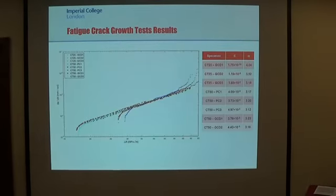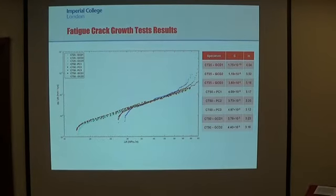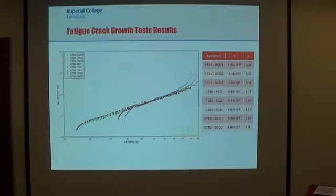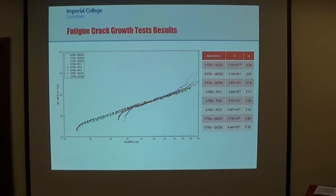Moreover, the crack growth rate per cycle has been plotted versus the stress intensity factor range ΔK on a log-log graph, as you can see from this picture. The results obtained from the GCD material have been compared with those previously obtained from the pre-compressed standard-size CT samples. Results are quite consistent, and a good agreement with the pre-compressed material is shown, as also confirmed by the magnitude of the Paris law equation constants, which are summarized in the table beside the picture.